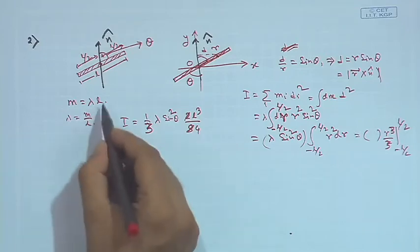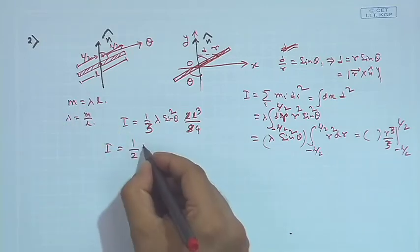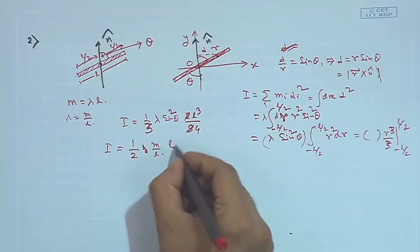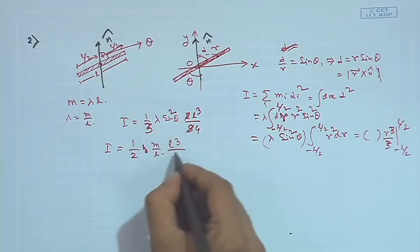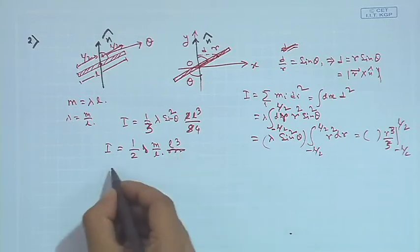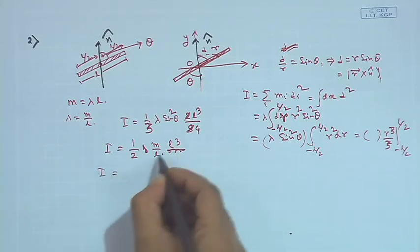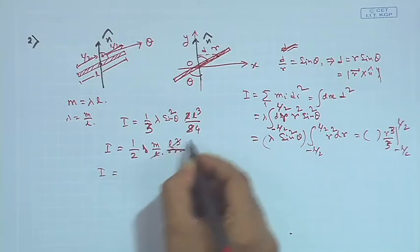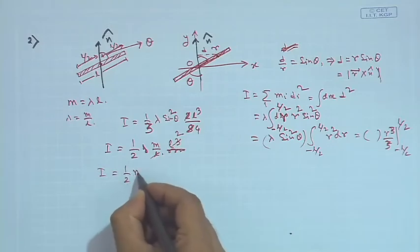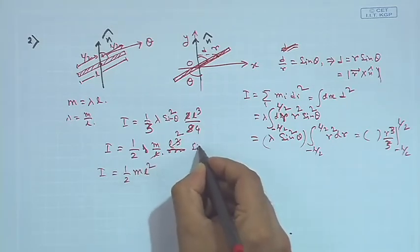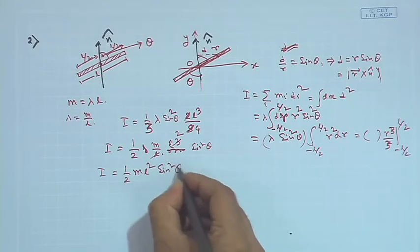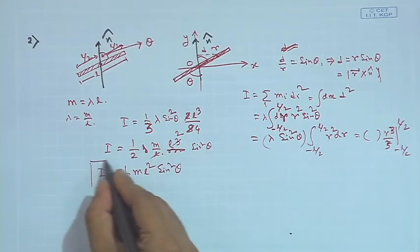Substituting λ = m/L and collecting all factors, the final answer is I = (1/12) mL² sin²θ.